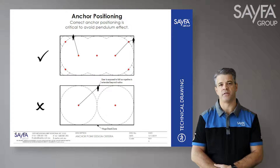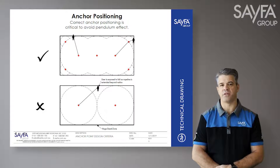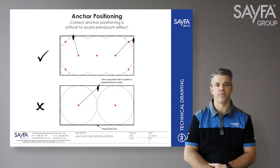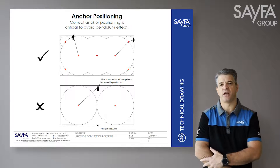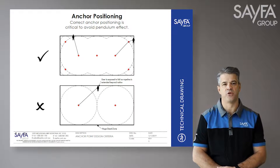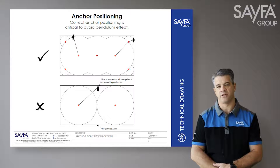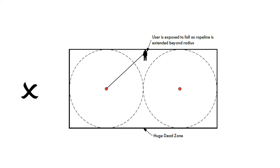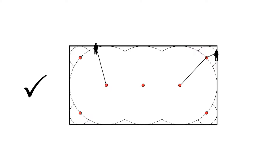Multiple anchors are required in most instances. It is important that the layout of the anchors allows access to all edges including corners without setting up a pendulum fall scenario. Anchor positioning and spacing must ensure minimal adjustment of the lanyard when attached to an anchor. Insufficient anchors or anchors spaced at the incorrect distance will create dead zones, requiring the operator to extend the rope lanyard. Additional anchors are required to ensure minimum dead zones and all areas are accessible without extending the lanyard.